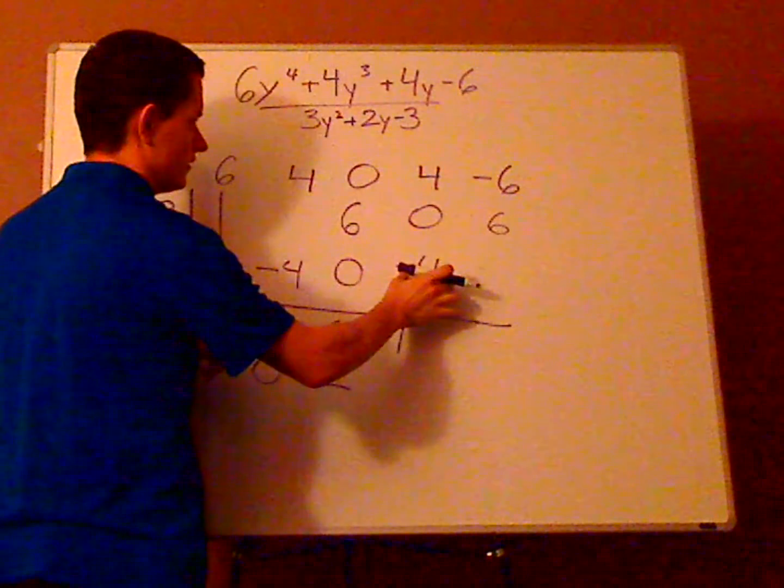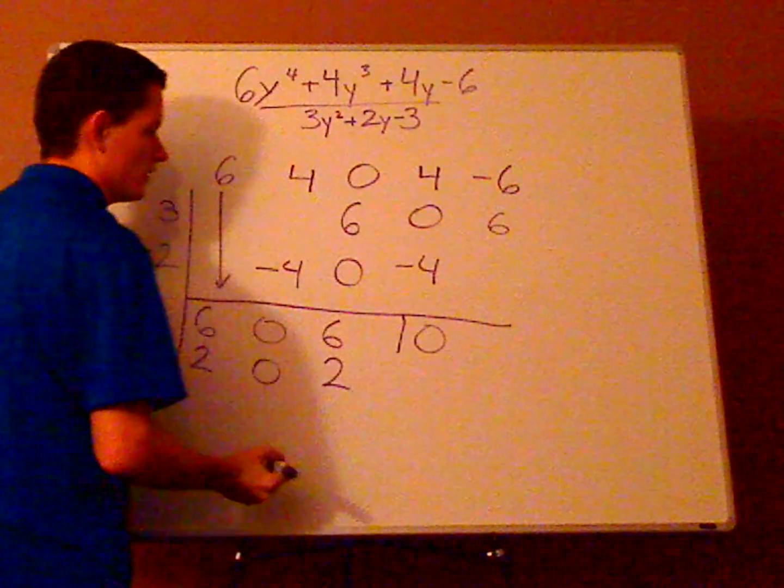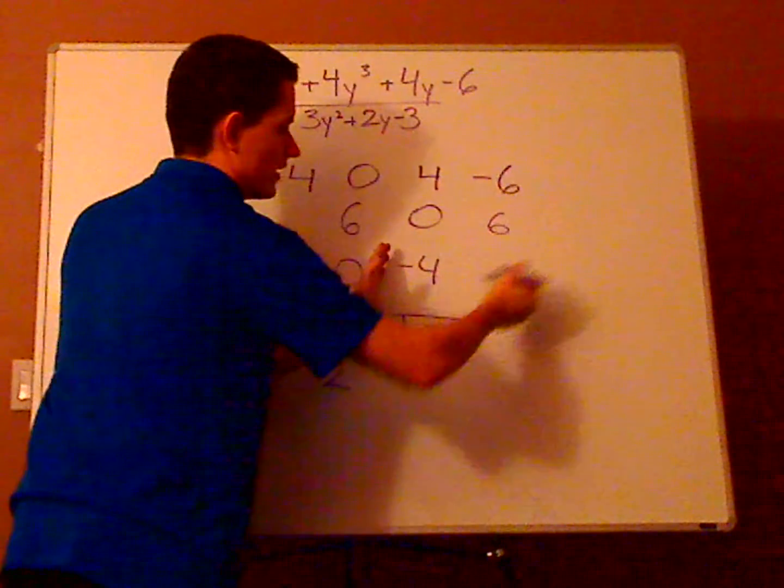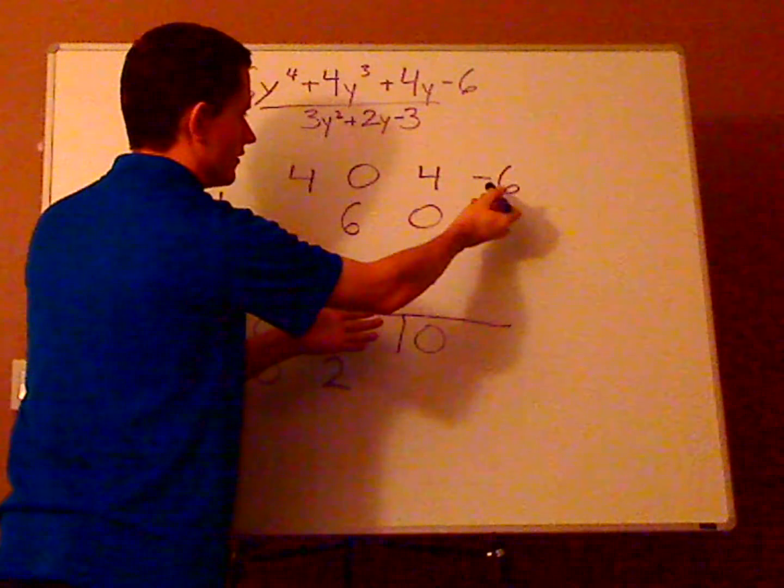Now you add, so 4 plus 0 plus negative 4 is 0. Now you don't have anything left diagonally, so you don't have to worry about multiplying again.